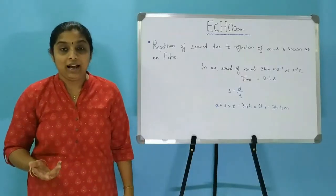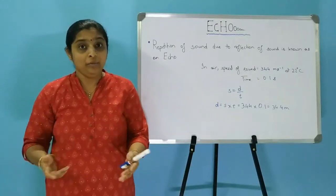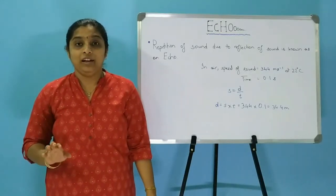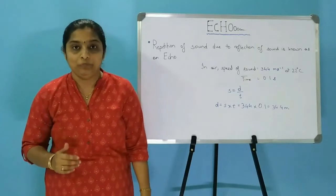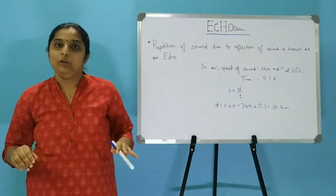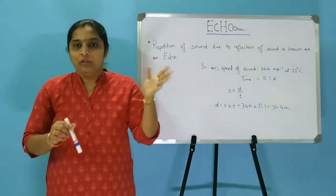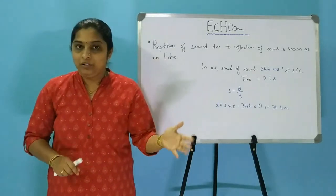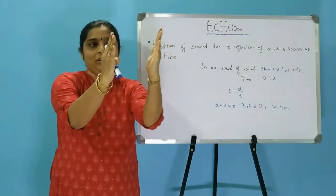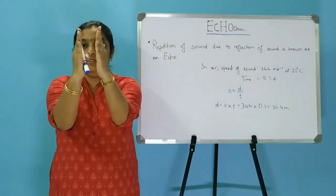If we clap or shout in a large room, we are able to hear it back. What do we call that? We call that an echo. We already know that sound travels in the form of compressions and rarefactions.